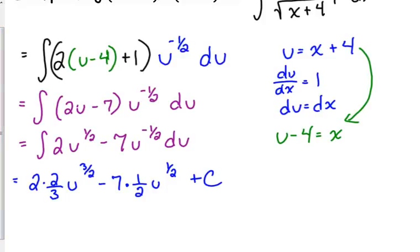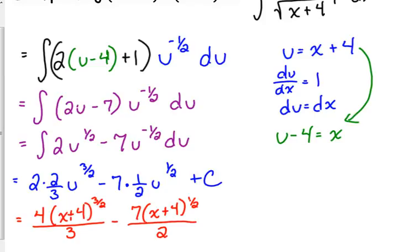So, that would be 4 times x plus 4 to the 3 over 2, all over 3, minus 7 times x plus 4 to the 1 half, over 2, plus c.